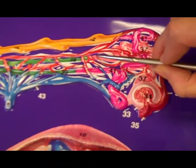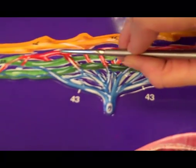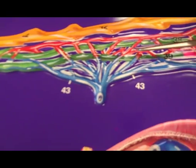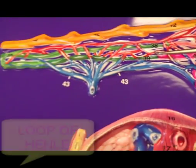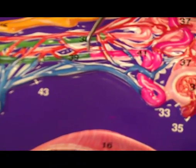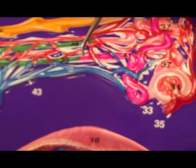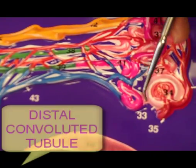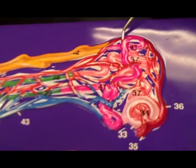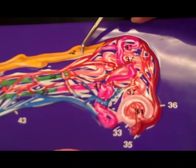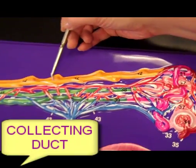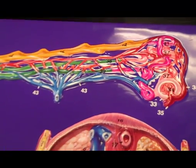The proximal convoluted tubule becomes green. The green structure goes all the way down and then all the way back up, making a nice hairpin turn — that is the loop of Henle. Coming off the green, it transitions to a bright pink, which is the distal convoluted tubule. Following the pathway of the distal convoluted tubule, the bright pink becomes yellow. Yellow represents the collecting duct — it's nice and yellow because we are collecting urine. That's the nephron.